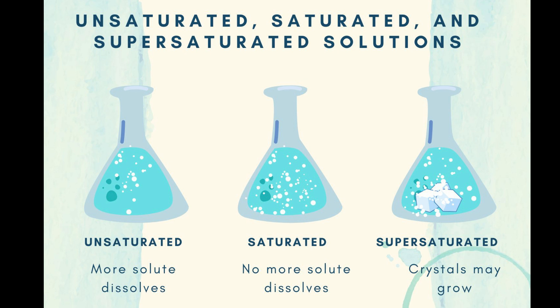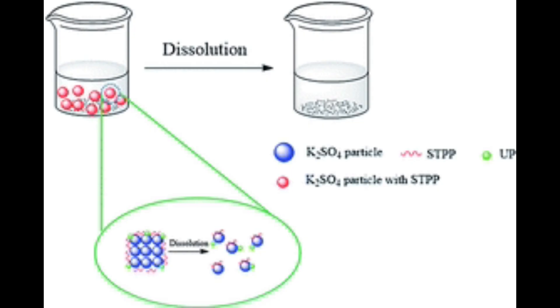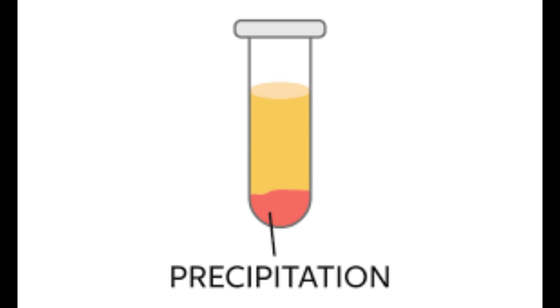Whenever the concentration exceeds the solubility, you have a supersaturated solution — concentration is greater than solubility. If there's a limit to how much we can dissolve in water, how is it possible to get a supersaturated solution? We'll talk about it later in the video. When you have an unsaturated solution and add more solute, it will dissolve. With a supersaturated solution, adding more solute can favor precipitation, so the solution may crystallize into a solid.